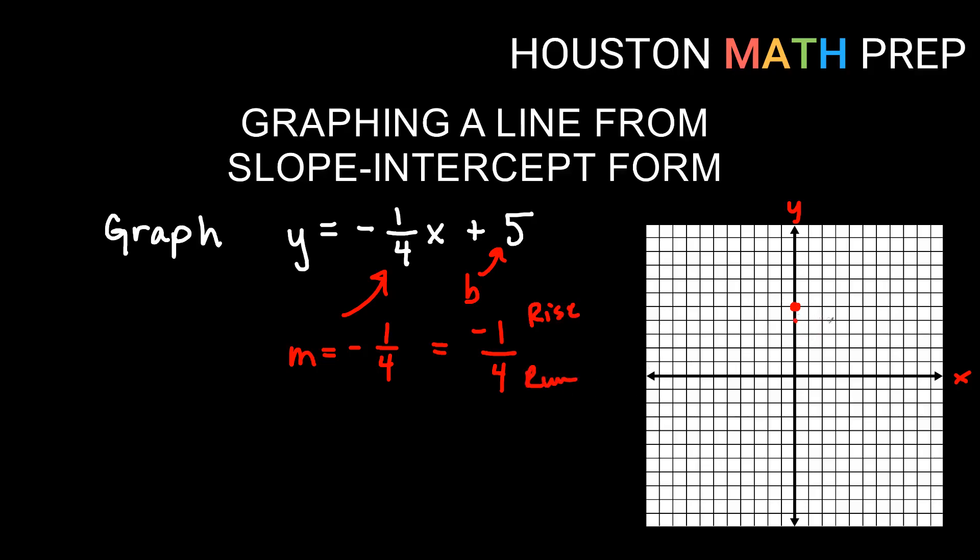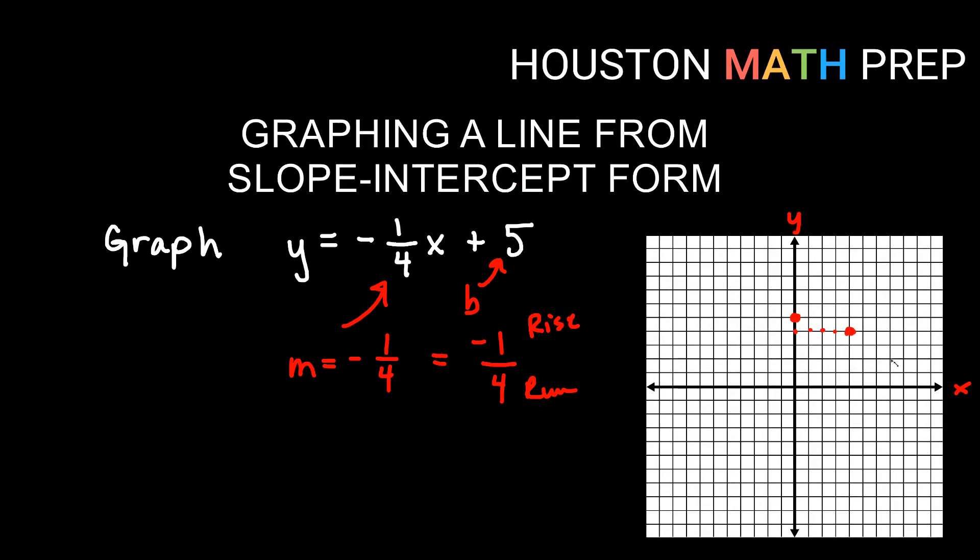My run is positive four, so that's going to be to the right four. So if I go down one and over four, then that puts me at this point here. And then I simply need to draw my line through those two points. And we get our graph of negative one-fourth x plus five.